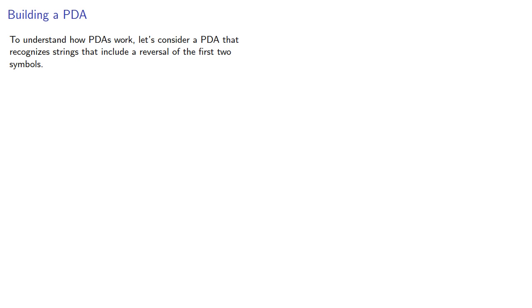To understand how pushdown automata work, let's consider a PDA that recognizes strings that include a reversal of the first two symbols. We might write this in metacode: store those first two symbols, then check all succeeding symbols to see if the reversal occurs.